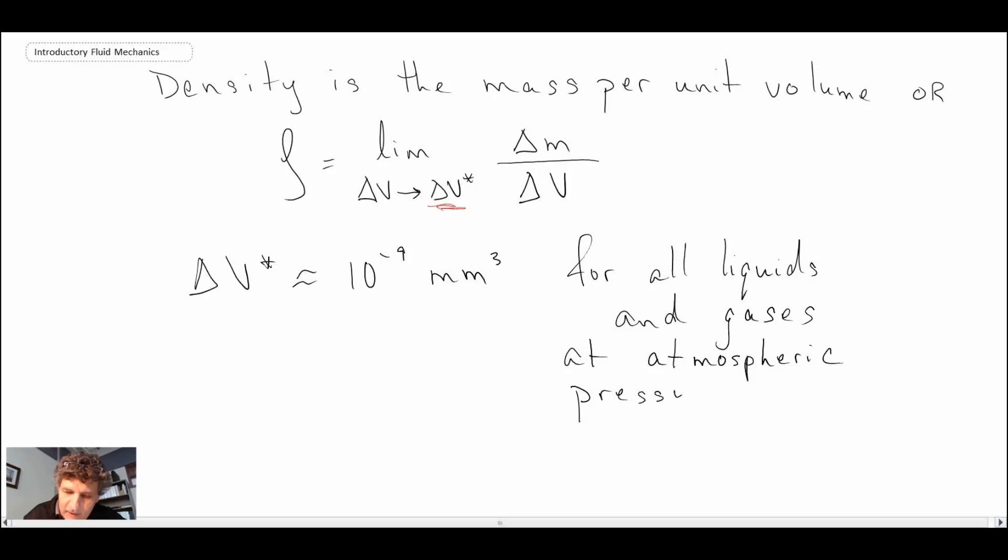That's kind of a rule of thumb or a value for all liquids and gases at atmospheric pressure. If you're dealing with gases at lower pressures, the mean free path—the spacing between collisions of those molecules—becomes larger and larger. Consequently, the volume that you would need to sample would become larger.